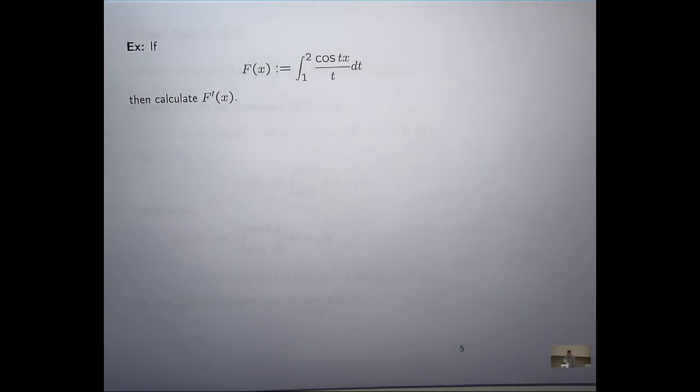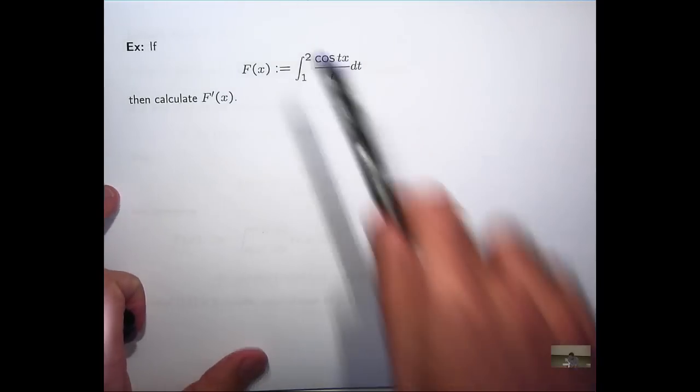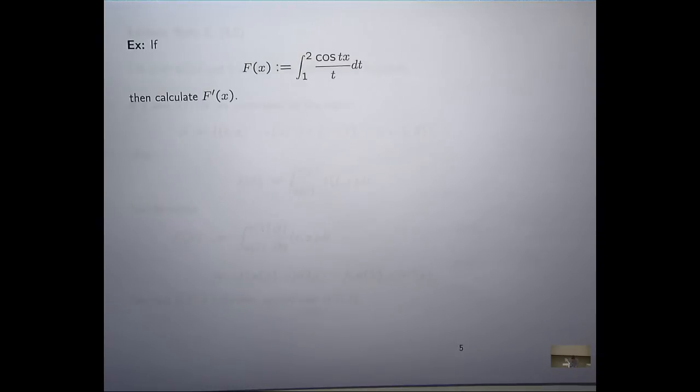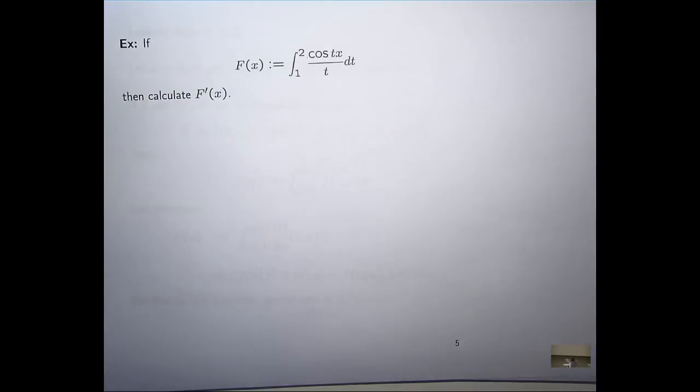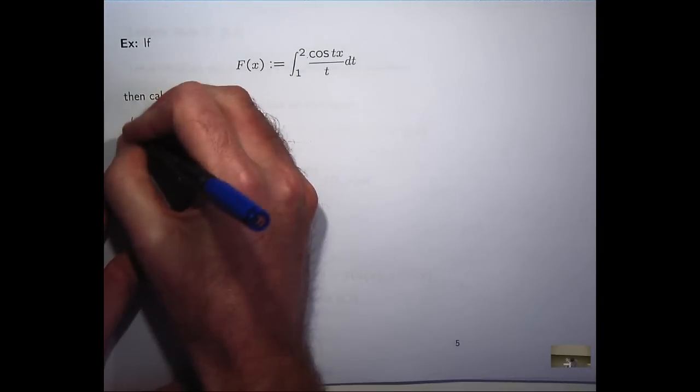So let's look at how we can use this Leibniz rule for differentiating an integral. This one's a real basic example. Here we've got a function of x defined in this way, calculate the derivative. Now, it would be tempting to try to integrate cosine tx over t with respect to t, but how are you going to do it? How are you going to do that? Imagine x is a constant in the integrand. What's the anti-derivative of cosine tx over t? So what we're going to do is just show how we can calculate the derivative using this.